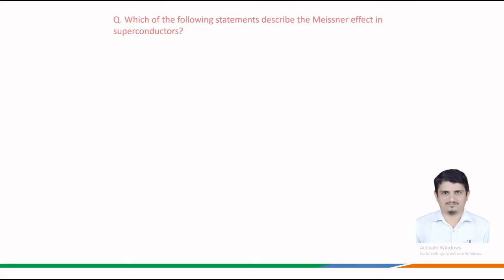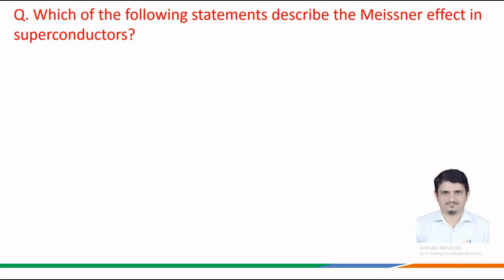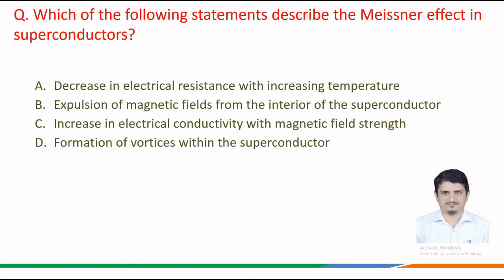The first question is: which of the following statements describes the Meissner effect in superconductors? The options given are: option a, a decrease in electrical resistance with increasing temperature; option b, expulsion of magnetic fields from the interior of the superconductor; option c, increase in electrical conductivity with magnetic field strength; option d, formation of vortices within the superconductor.